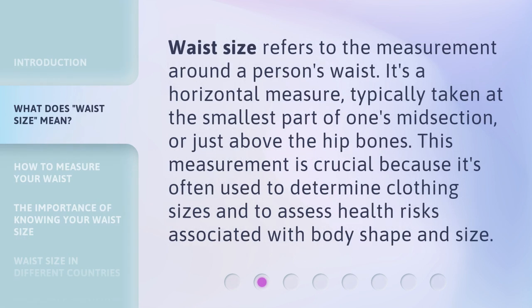Waist size refers to the measurement around a person's waist. It's a horizontal measure, typically taken at the smallest part of one's midsection, or just above the hip bones. This measurement is crucial because it's often used to determine clothing sizes and to assess health risks associated with body shape and size.